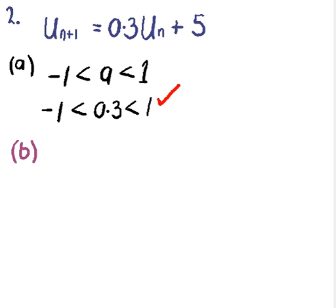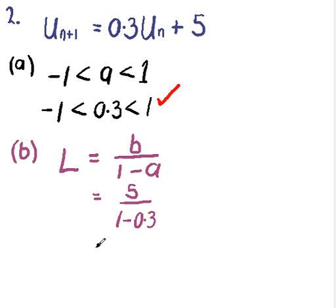Part (b) says find the exact value of this limit. In order to work out the limit, we use the limit formula. So L, the limit, equals b divided by 1 minus a, where a is this number 0.3, the multiplier, and b is the number on the end. So our limit is 5 divided by 1 minus a, which is 1 minus 0.3, and that gives us 5 over 0.7.